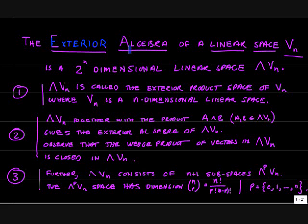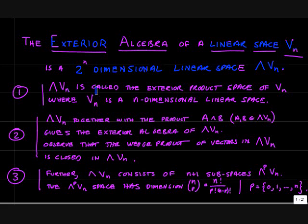The exterior algebra is constructed from any linear space Vn, and the exterior algebra is a 2n dimensional linear space denoted by this capital wedge acting on Vn. Wedge Vn is called the exterior product space of Vn, and this object — wedge Vn — is a linear space.